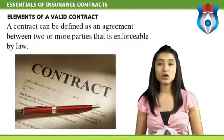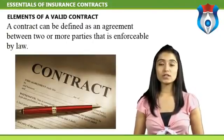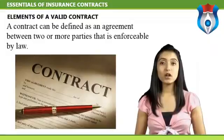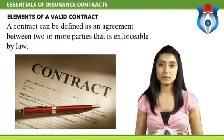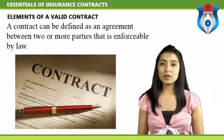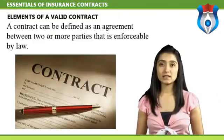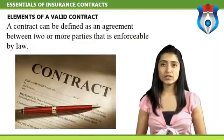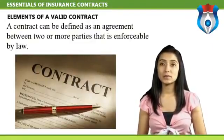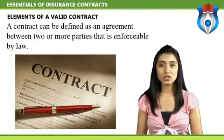Let us now discuss the elements of a valid contract. A contract can be defined as an agreement between two or more parties that is enforceable by law. Insurance policies are contracts, and as a producing agent, one must know the various components of policy contracts. Experience may be limited primarily to two-party contracts, but there may be more than two parties involved in an agreement. The parties do not even have to be people — they may also be partnerships, corporations, associations, or labor unions.